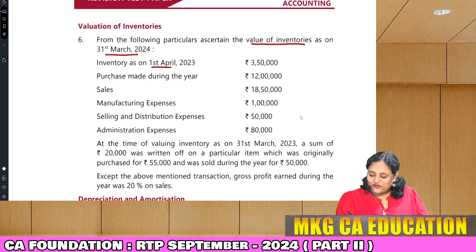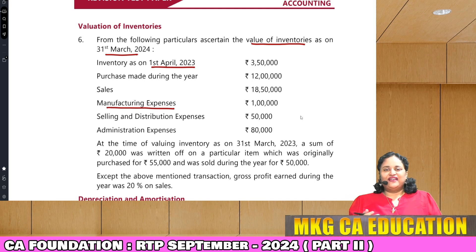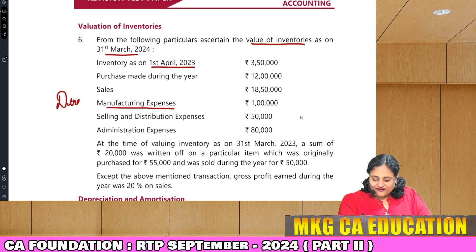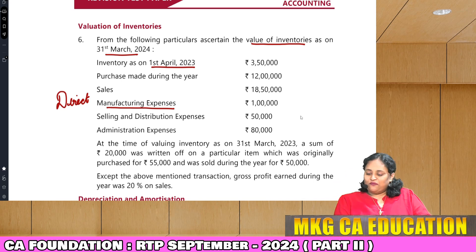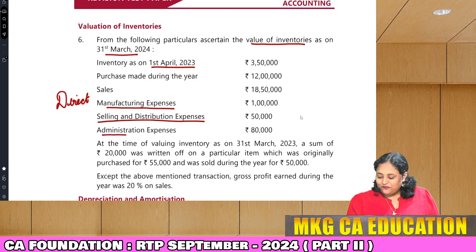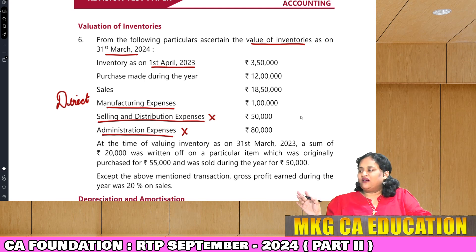We have been given inventory as on 1st April, then purchases, then sales, then manufacturing expenses. Manufacturing expenses are our direct expenses. When we take closing stock valuation, direct expenses including manufacturing expenses are also in the nature of direct. Selling and distribution expenses and administration expenses — while valuing inventory, these are not considered. So these two expenses we have to ignore.